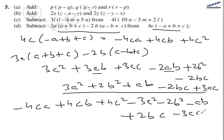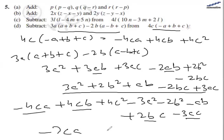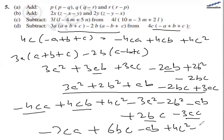Collecting like terms: minus 3ca minus 3ac gives minus 7ca. Then minus 4cb plus 4cb plus 2bc gives plus 6bc. We also have minus ab, plus 4c² minus 3a² minus 2b². So the final answer for part d is: minus 7ca plus 6bc minus ab plus 4c² minus 3a² minus 2b².